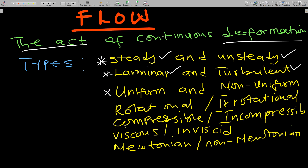Uniform and non-uniform flow deals with the velocity of a fluid. When the velocity of a fluid does not change at any point in time, that is uniform flow. If the velocity changes at a particular point in time, we are talking about non-uniform flow.